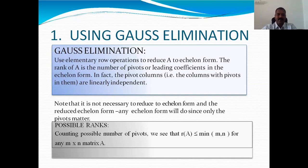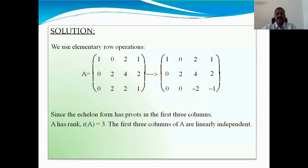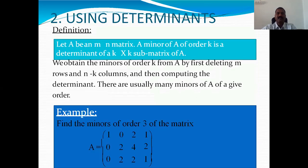What matters is counting the number of pivots. In general, if A is an M by N matrix, then the rank of A is less than or equal to the minimum of M and N. For example, take a 3 by 4 matrix A. We perform a sequence of elementary row operations to reduce it to echelon form, and we can see there are three pivots in the first three columns. So rank of A equals 3, and the first three columns are linearly independent.